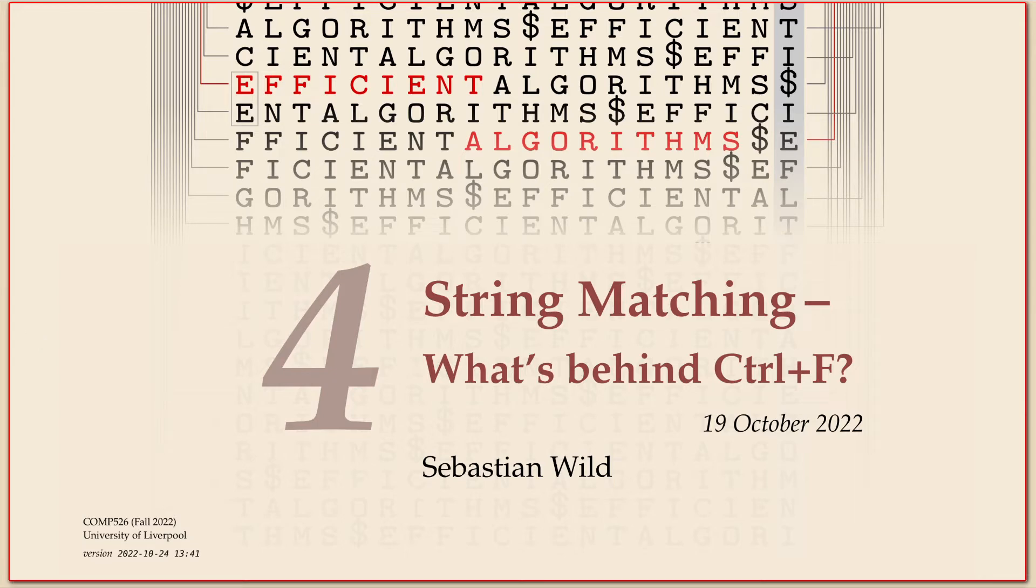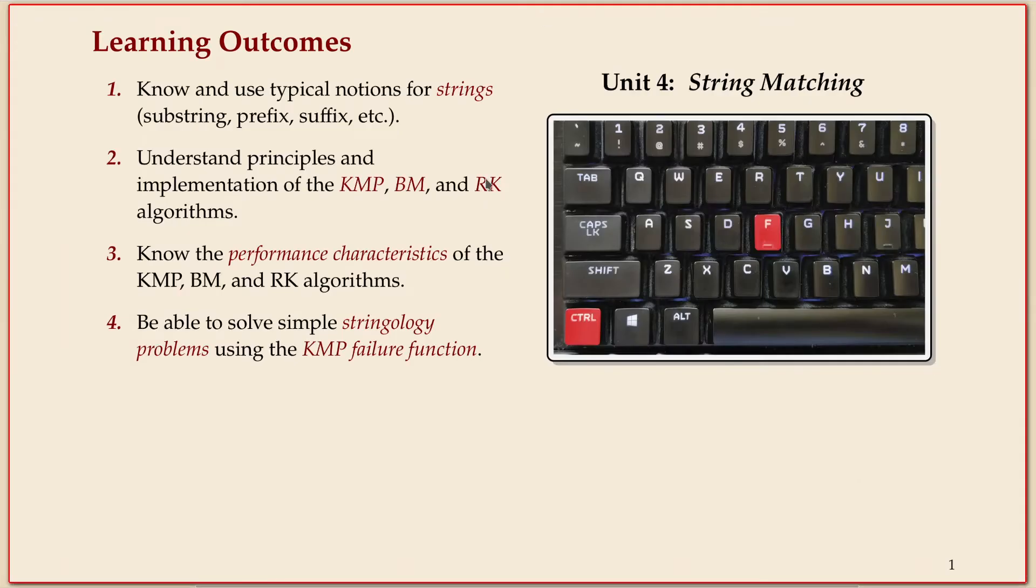The learning outcomes for this unit are: know some basics about strings if you haven't seen this before. It's something ubiquitous in all of programming and computer science. There's a few concrete algorithms we'll look at: the Knuth-Morris-Pratt, Boyer-Moore, and Rabin-Karp algorithms. That's what these abbreviations stand for. And as always, like for the sorting unit, I want you to not just be able to execute the algorithms but understand when they are good and when they're not so good.